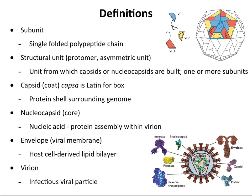Some definitions you should know. A subunit — or structural subunit — refers to a single polypeptide. In the context of poliovirus, the individual polypeptide chains are called VP1, VP2, and VP3. The structural unit is the unit from which capsids or nucleocapsids are built. If you take those three subunits, you make a structural unit — shown in blue, red, and yellow. Other names you will see in the book are protomer or asymmetric unit.